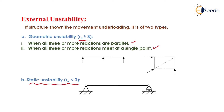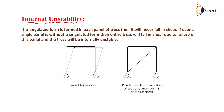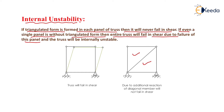When the reaction is less than three, it is a case of static instability. This is the same for beams, frames, and trusses. The only change is in internal instability. Internal instability of a truss: if a triangulated form is formed in each panel of the truss then it will never fail in shear. If even a single panel is without a triangulated form, then the entire truss will fail in shear due to the failure of that panel.